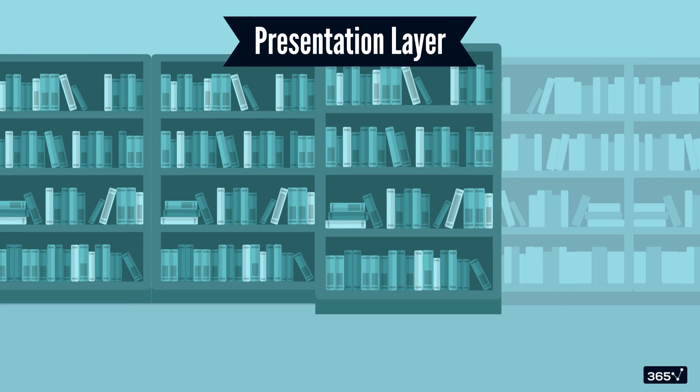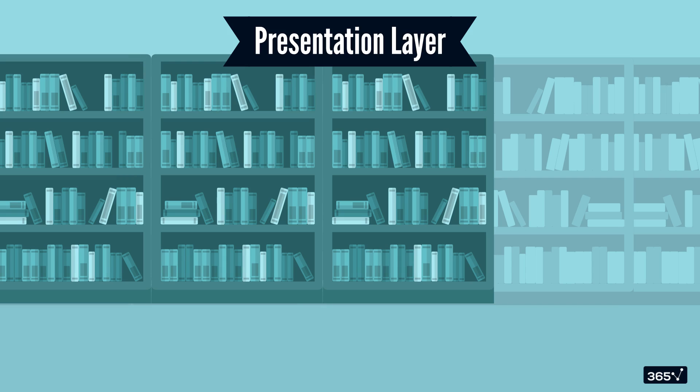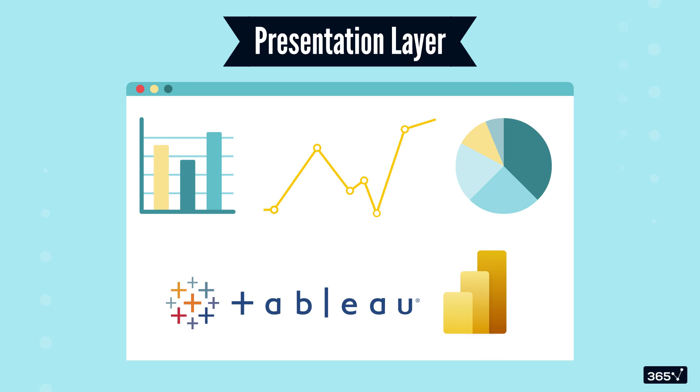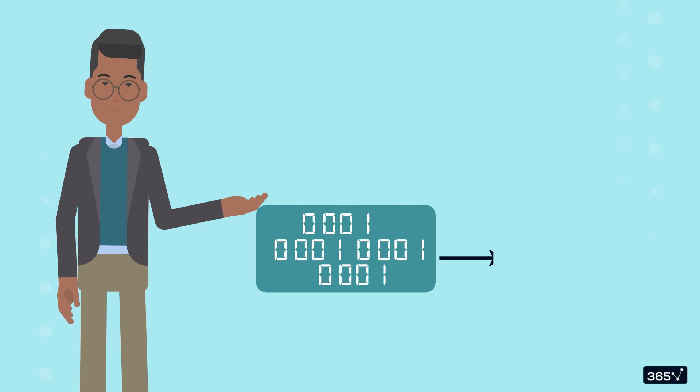And finally, the presentation layer. This is the part where books arrive on the shelves that you see in libraries, or in more general data terms, the reporting layer. In data systems, users access the final data in dashboards, reports, and analyses. In several modern architectures, tools like Tableau and Power BI are used to build the final presentation layer, where raw data becomes actionable intelligence.